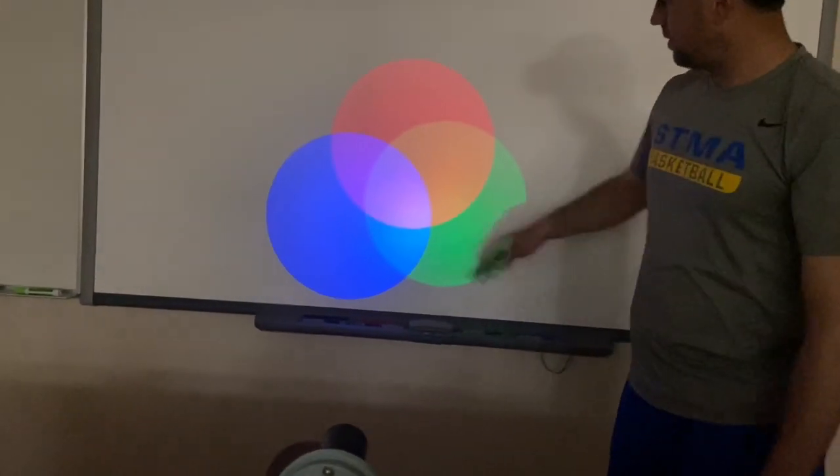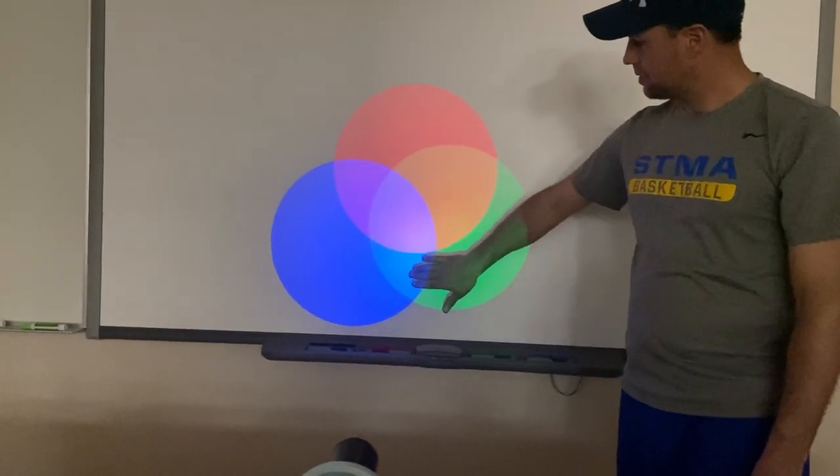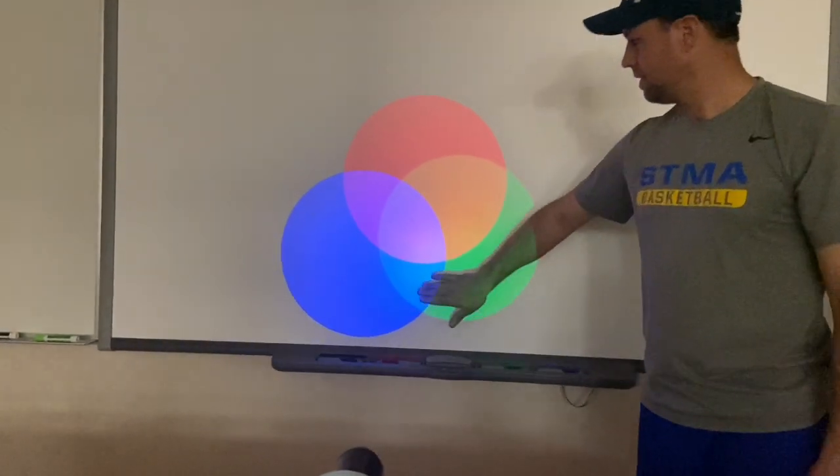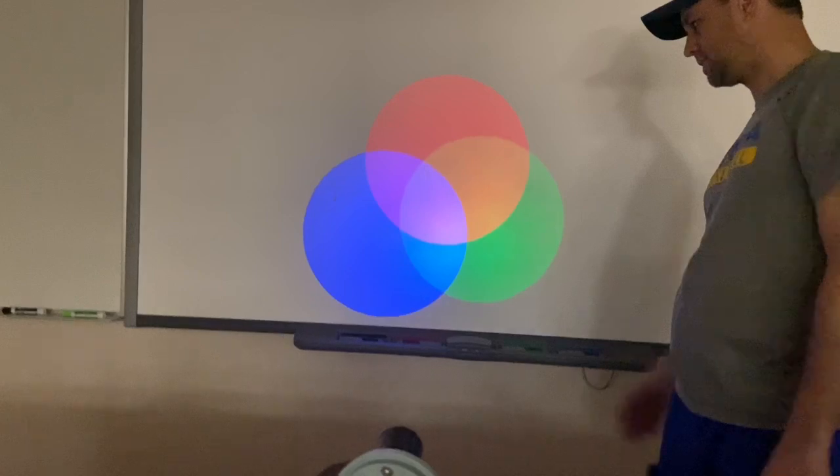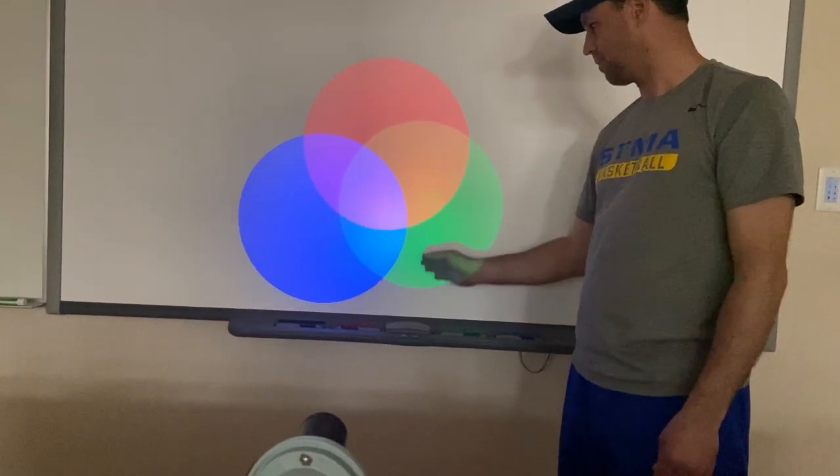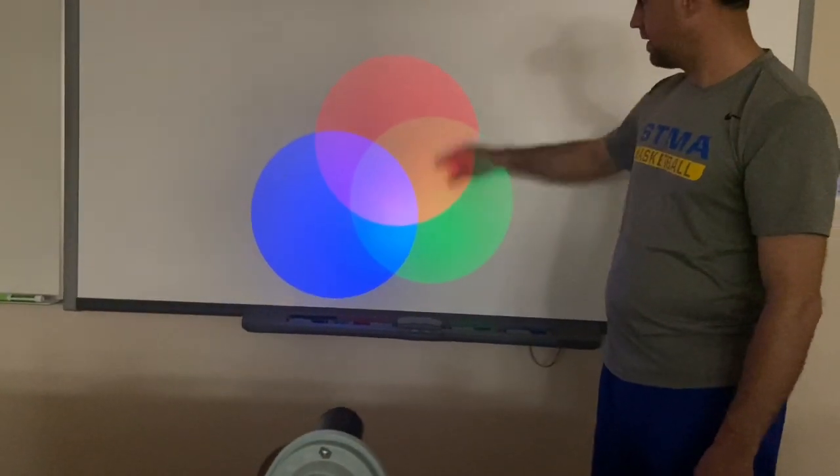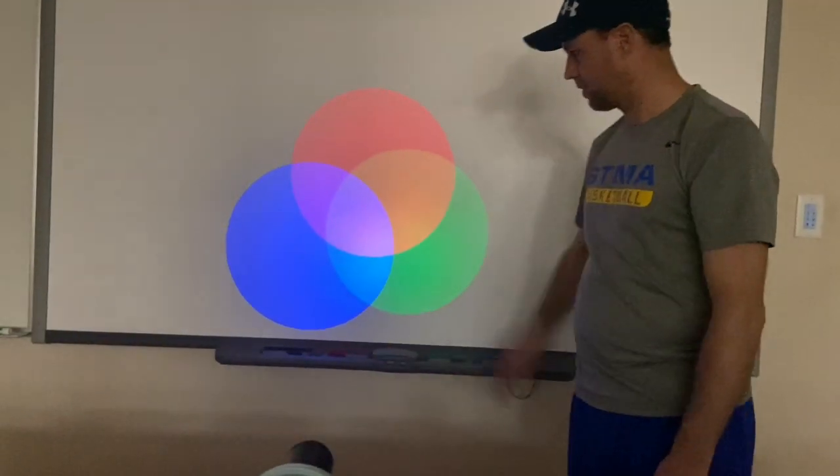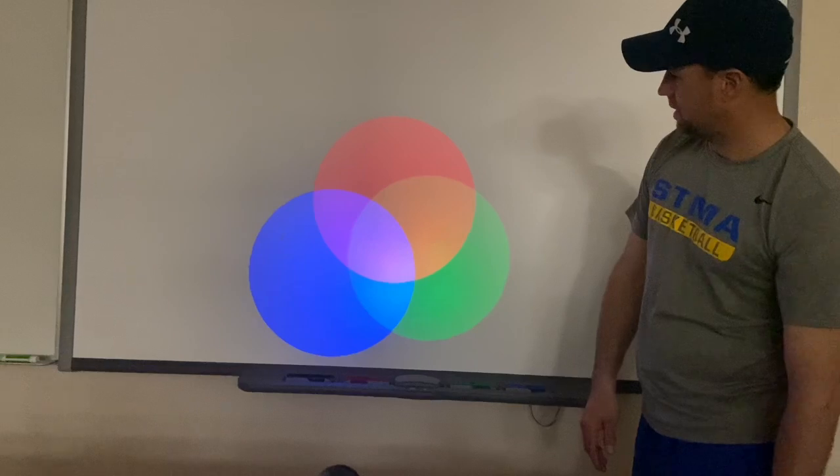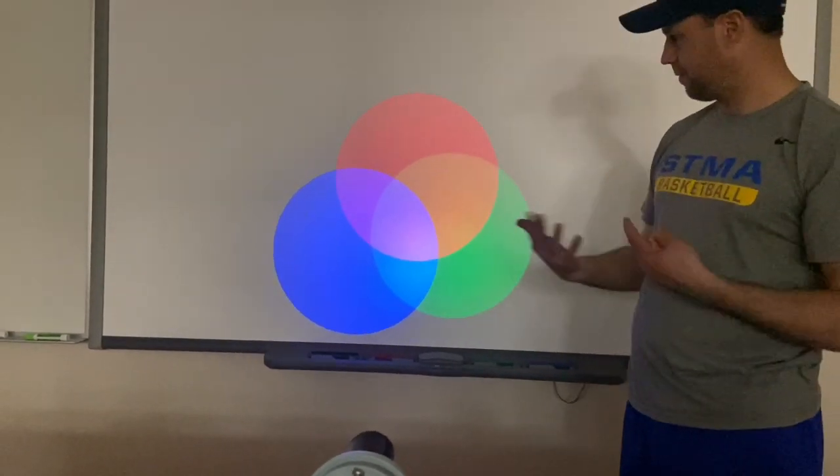All right, so these ones that are opposite of each other are what we call complementary colors. So cyan is kind of like green and blue together. That is opposite of red because cyan doesn't contain any red. It contains blue and green. The two primaries it has are blue and green. And so if you mix it with red, you're going to get white. Yellow contains red and green. So if you mix it with magenta, you're going to get white. And what is the last pair? Blue mixes with yellow to make white.